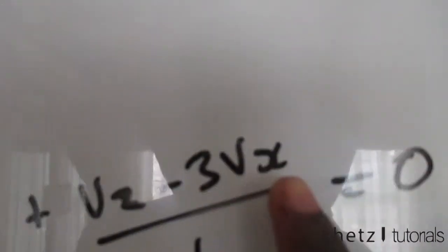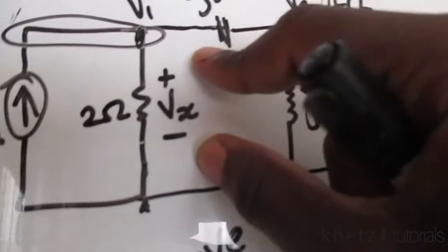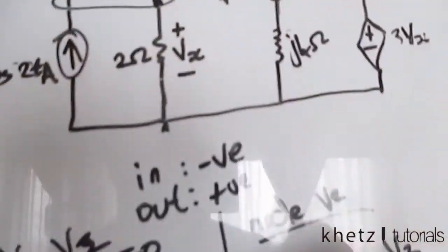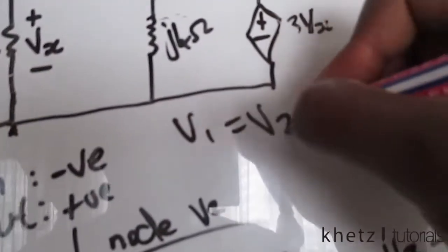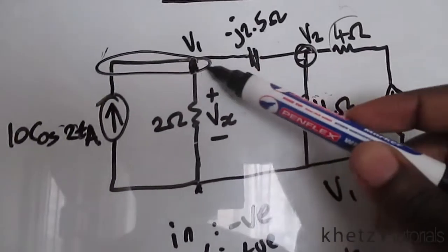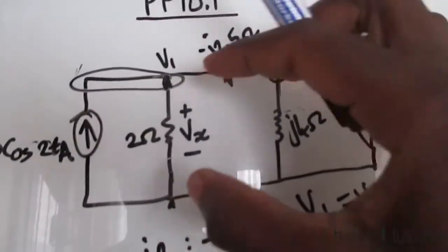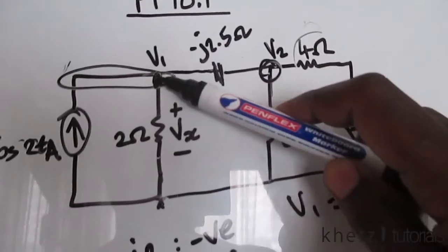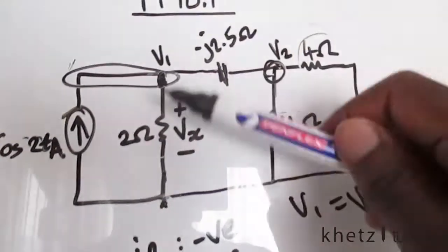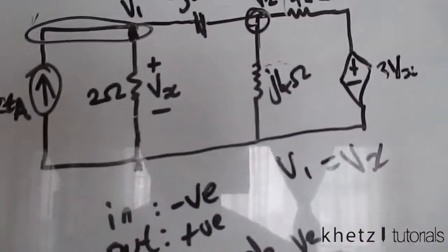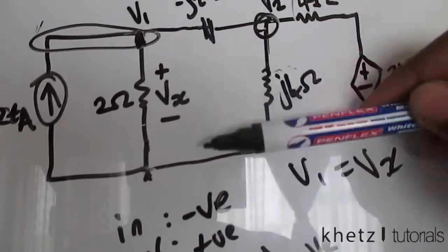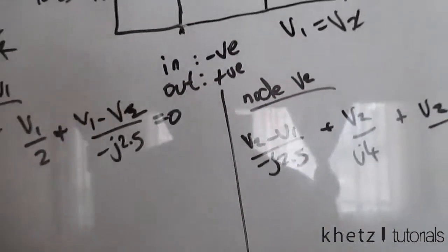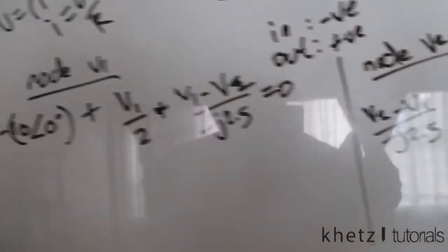We have a new variable Vx, but V1 is the voltage directly across that same resistor. If you measured with a multimeter between that point and ground, you'd get V1. Therefore Vx equals V1, and we can substitute V1 for Vx throughout.